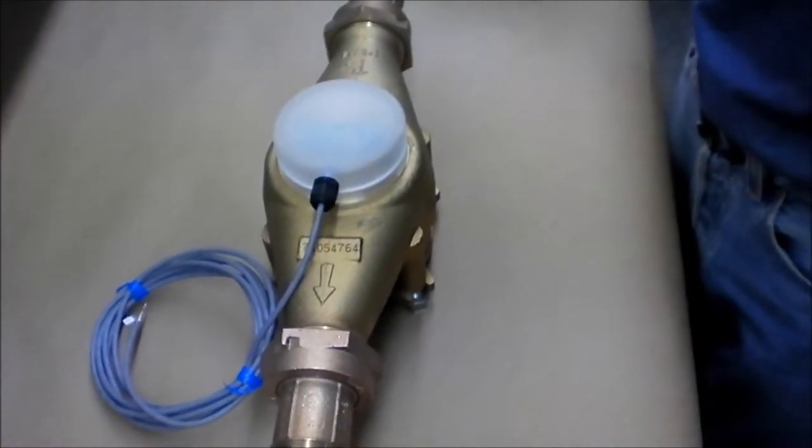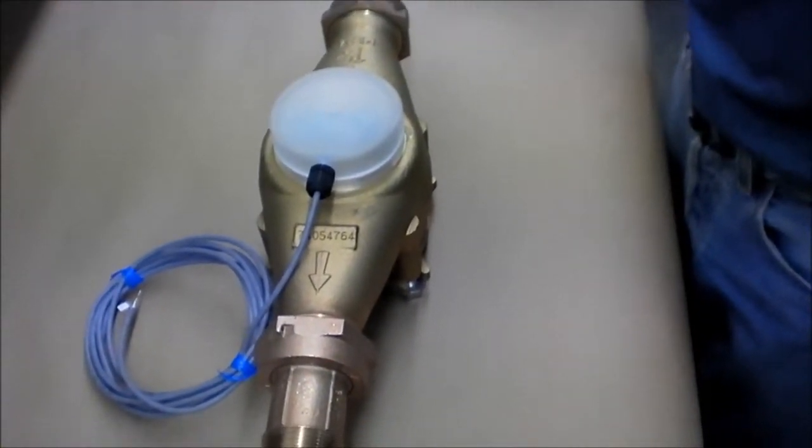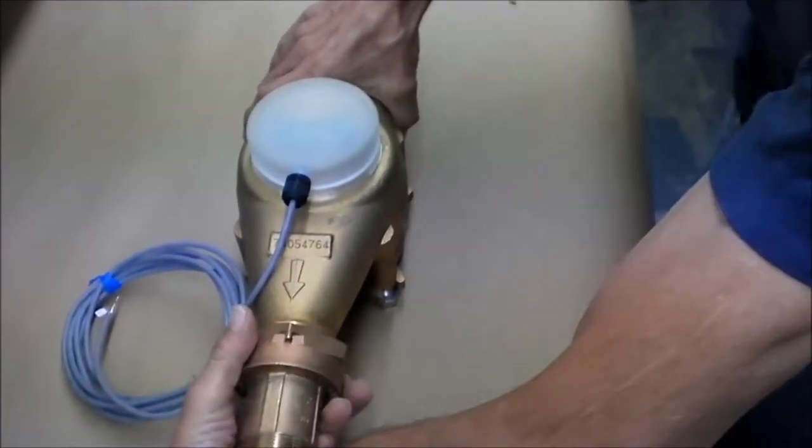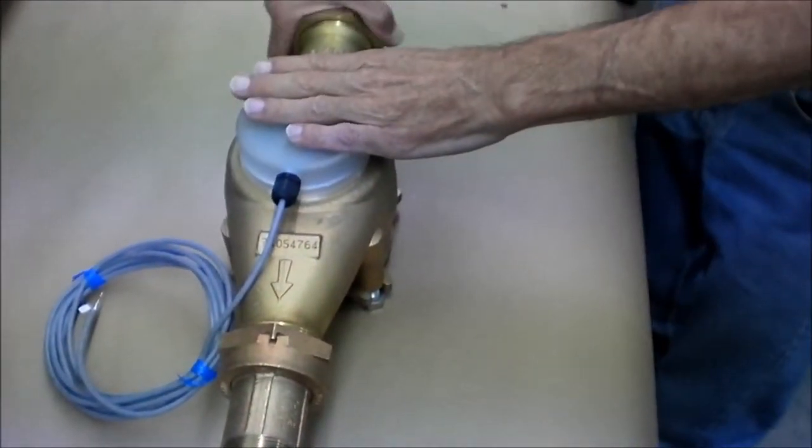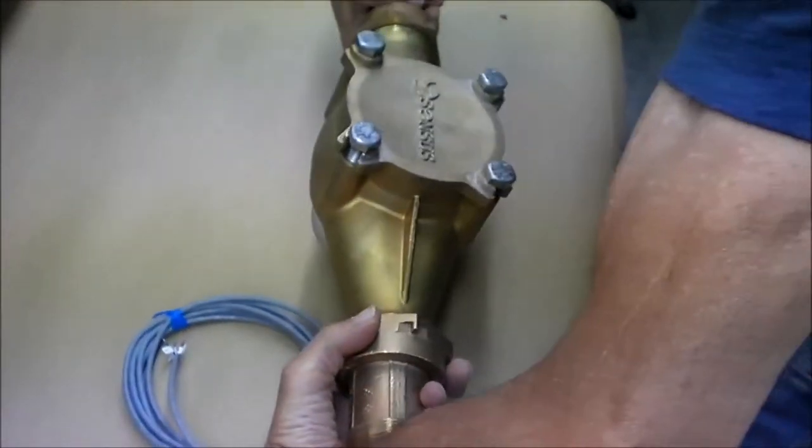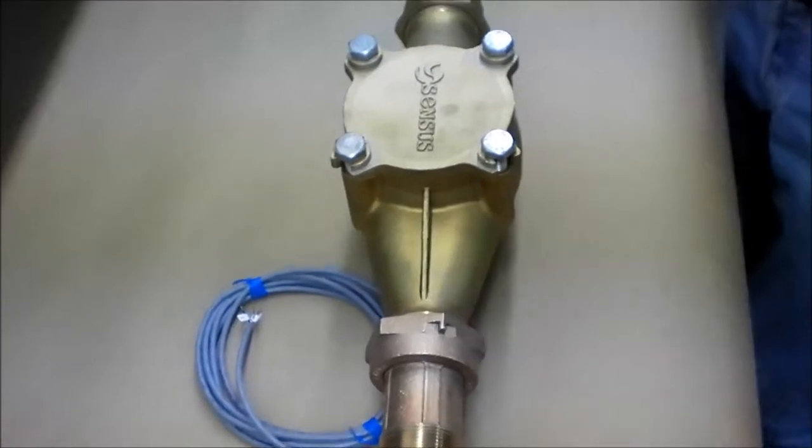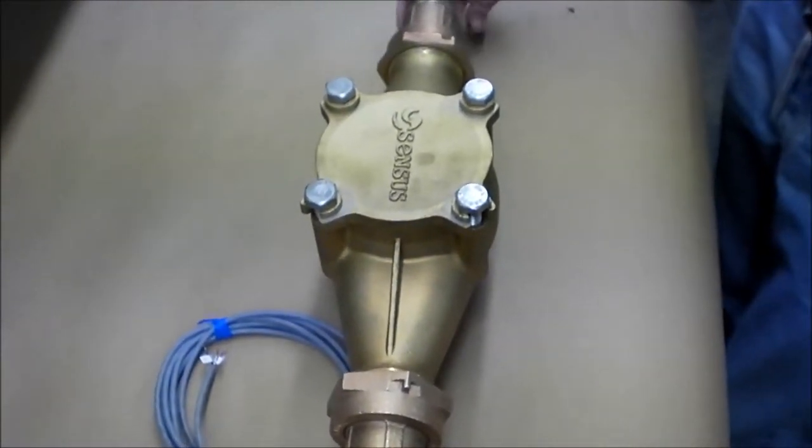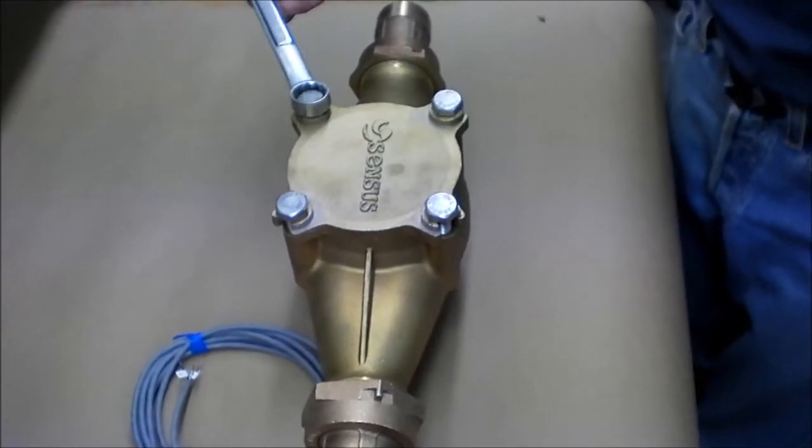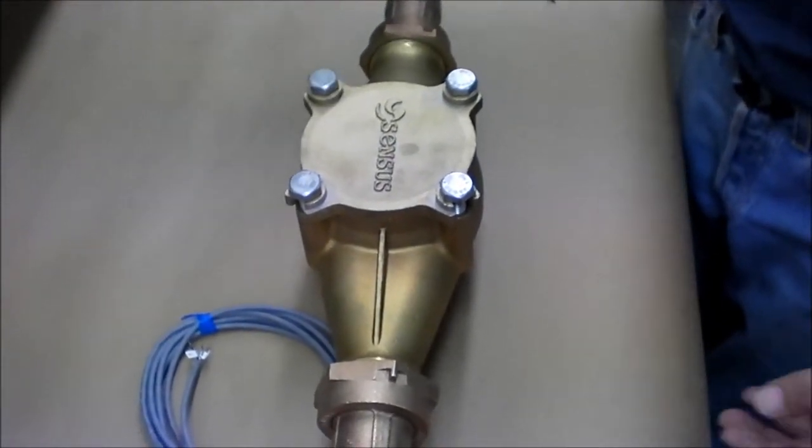The meter typically will be in your line. The first step is going to be to loosen the couplings so that you can turn your meter over to access the cover plate. Typically at this point you would just take your wrench and remove these screws. Craig's going to have to do a little different today because it's not installed in the line.